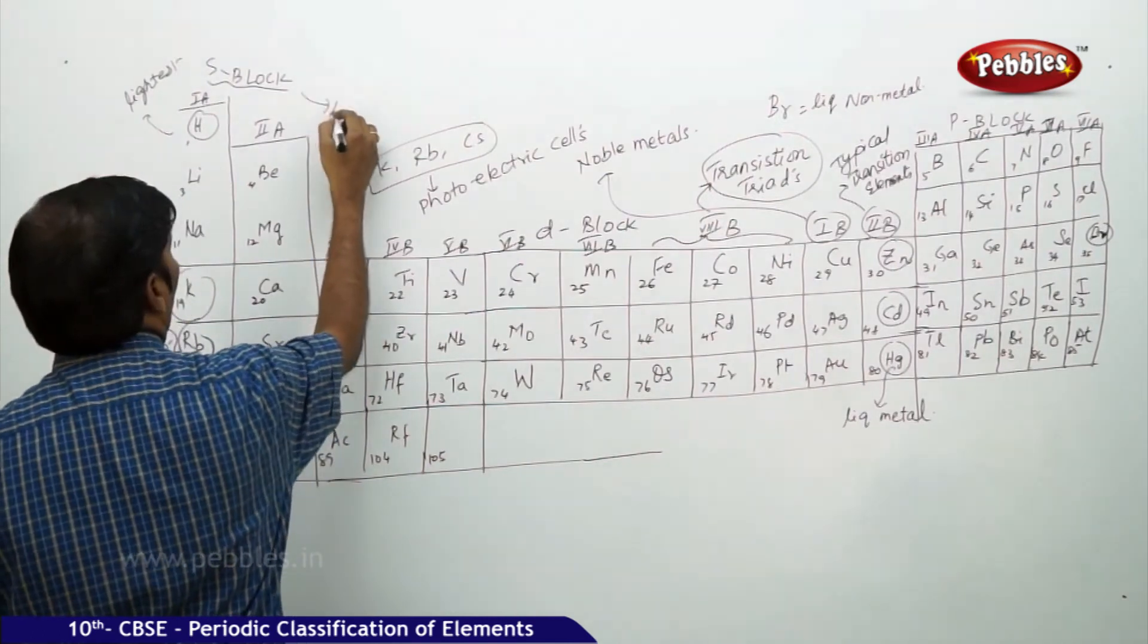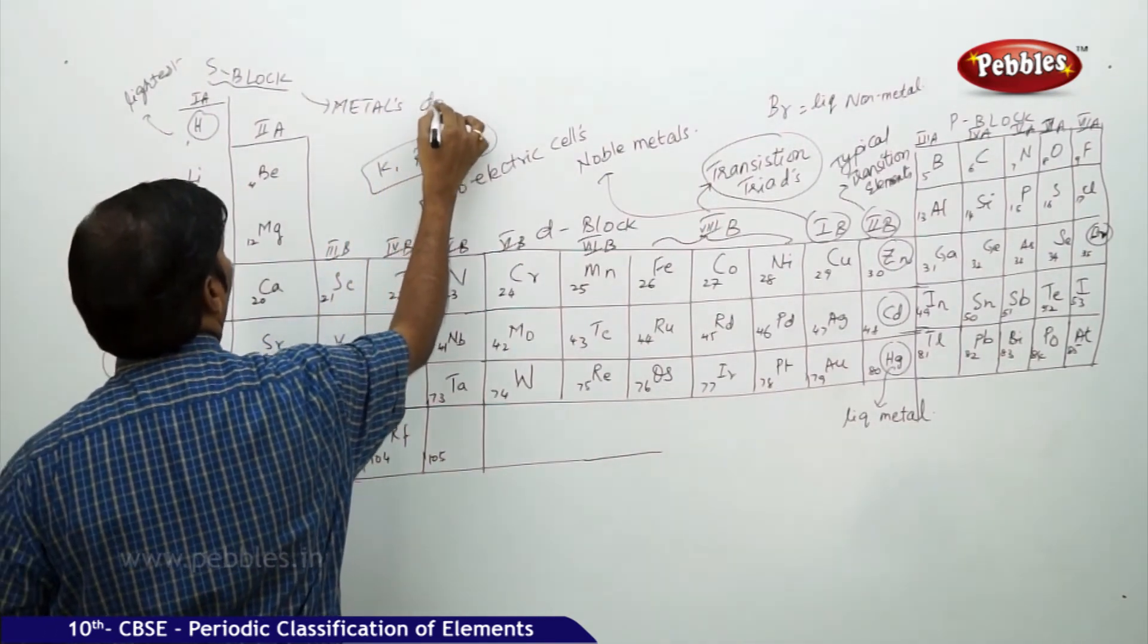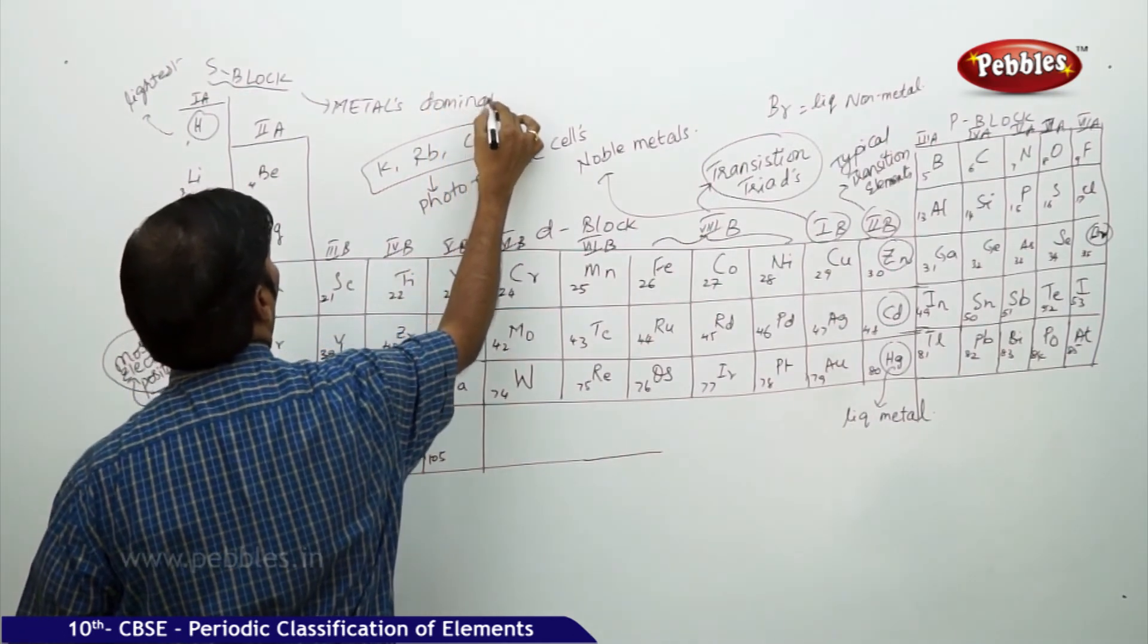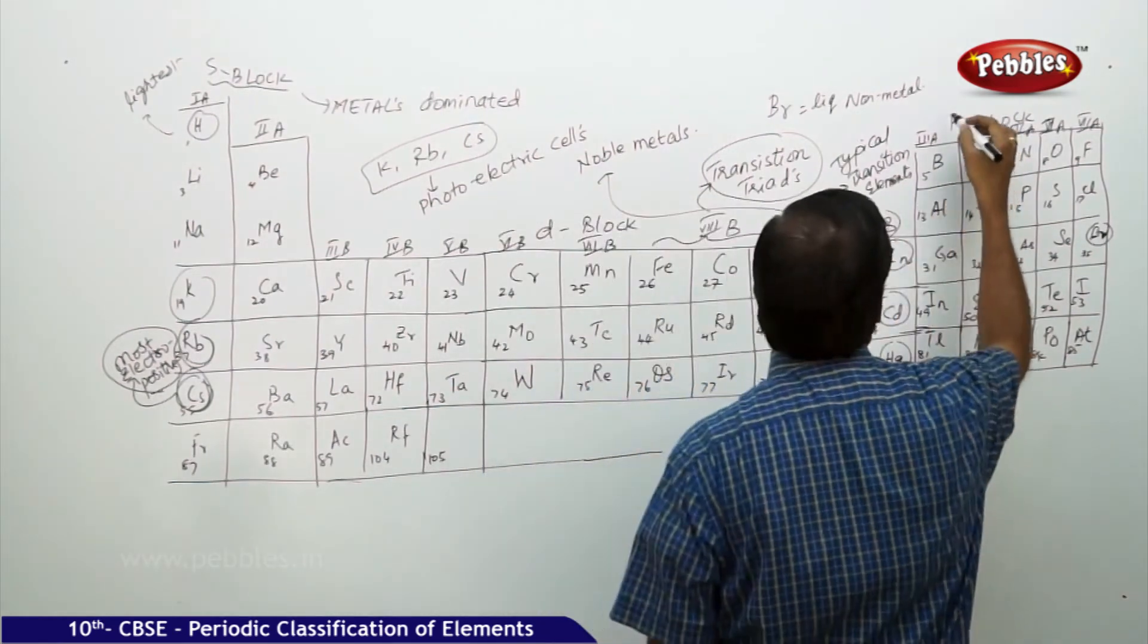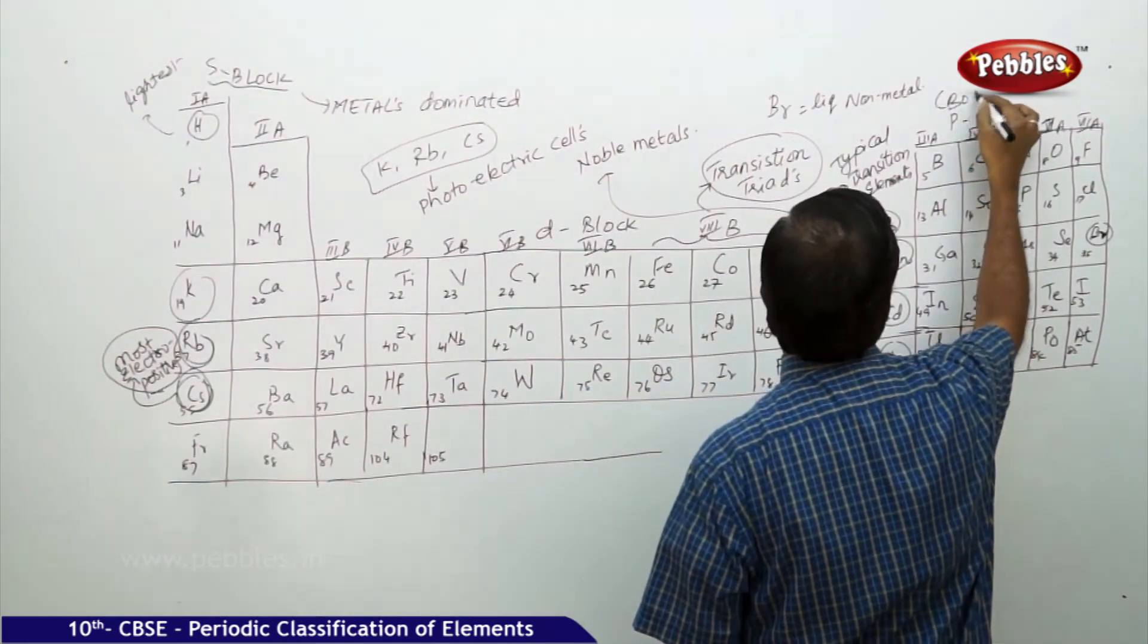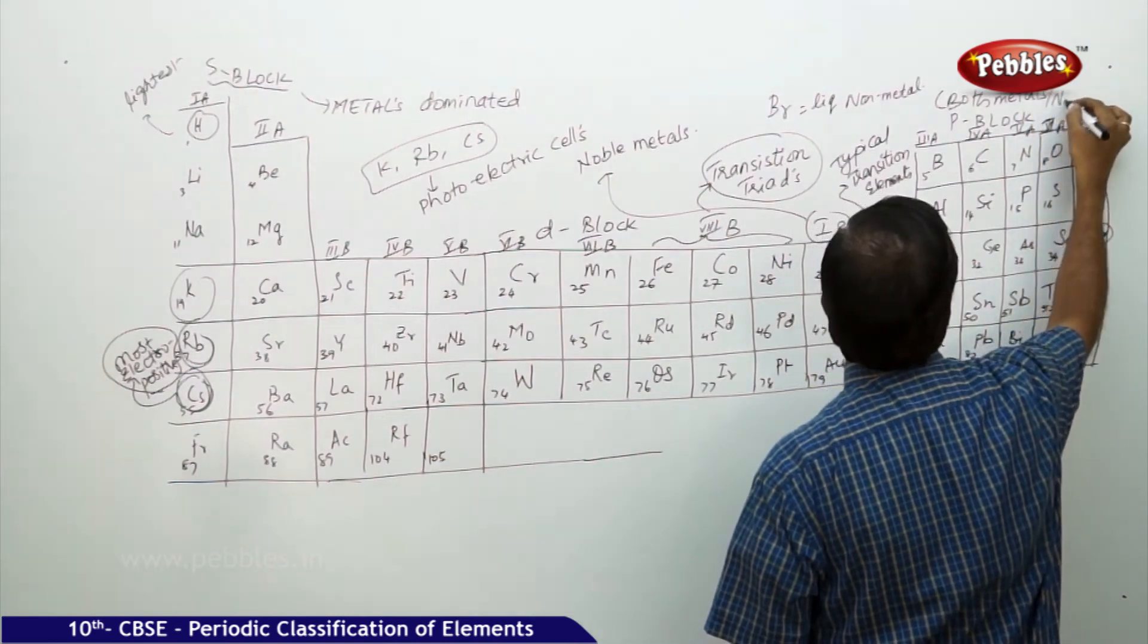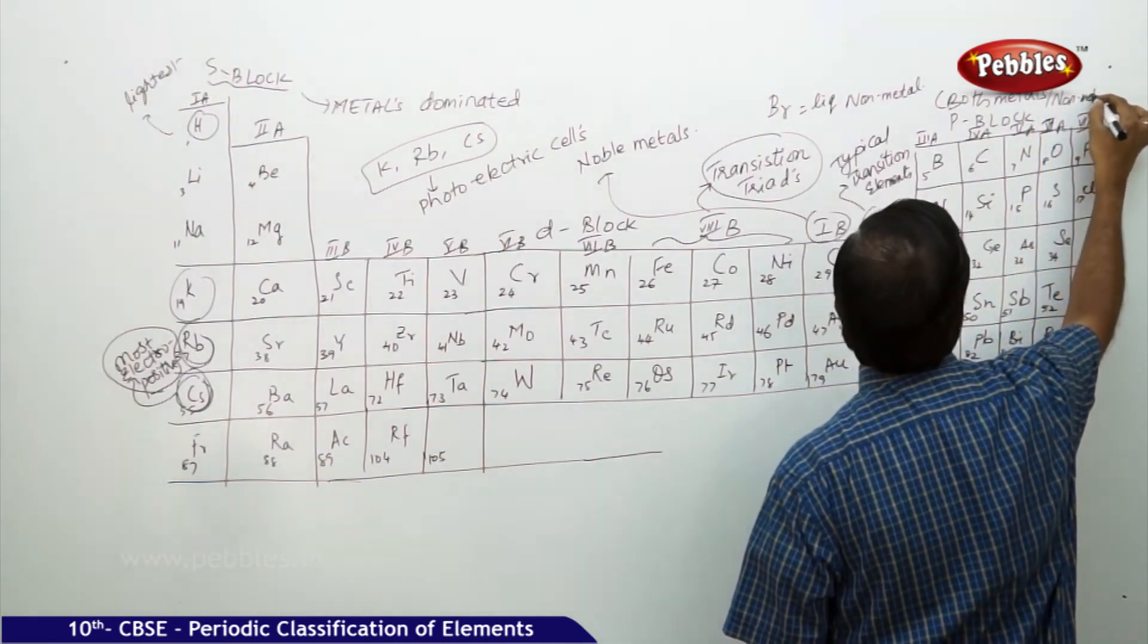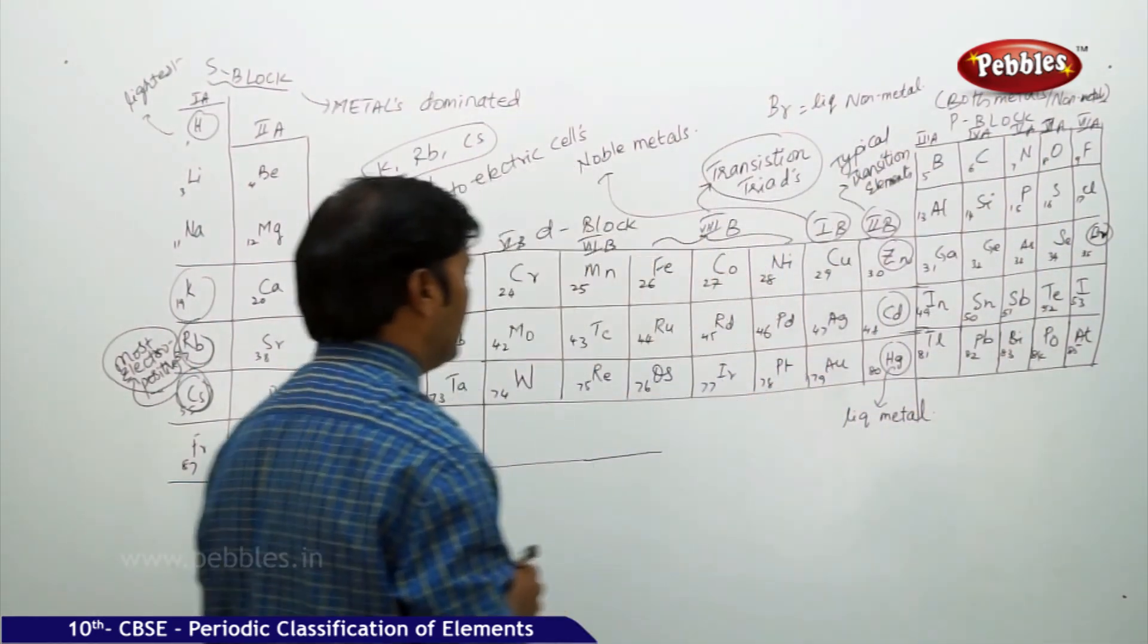S block elements are metals dominated. P block elements are both metals and non-metals.